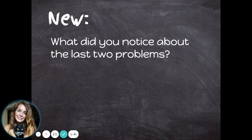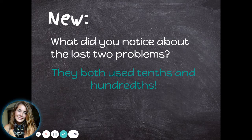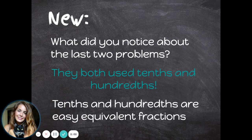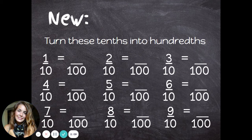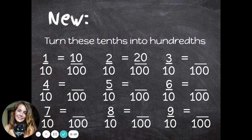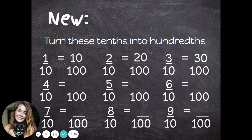What did you notice about the last two problems? They both used tenths and hundredths. Tenths and hundredths are easy equivalent fractions. Let's try turning some tenths into hundredths. One-tenth equals ten-hundredths. Two-tenths equals twenty-hundredths. Three-tenths equals thirty-hundredths. Four-tenths equals forty-hundredths.